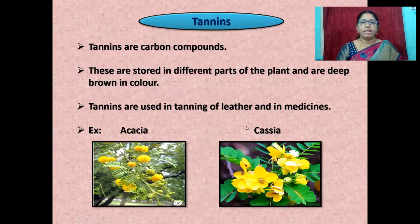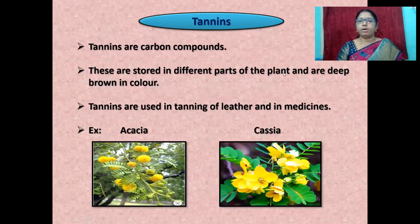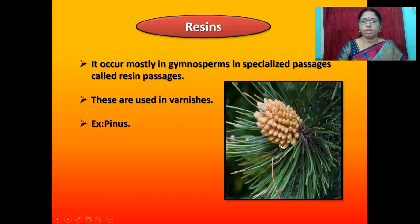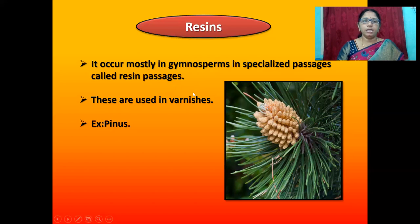The next secondary metabolite is tannins. Tannins are carbon compounds stored in different parts of the plant and are deep brown in color. Tannins are used in tanning of leather and in medicines. Examples include acacia and cassia. The next secondary metabolite is resins. Resins occur mostly in gymnosperms in specialized passages called resin passages. They are used in varnishes. An example is pinus.